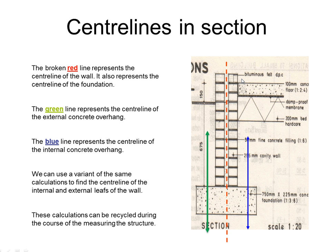Centre lines in section. We have to get used to looking at centre line on a sectional basis. We've seen it on plan with our foundation, but within a substructure there are usually brickwork, blockwork, and filling on the external and internal faces. The red line represents the centre line of the wall itself. The green line represents the centre line of the external concrete overhang. And the blue line represents the centre line of the internal concrete overhang. We can use a variant of these calculations to find the centre line of the internal and external leaves of the wall, and these calculations can be recycled during the course of measuring the structure, as long as they are annotated correctly.